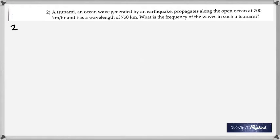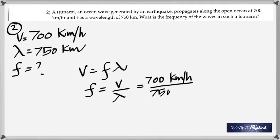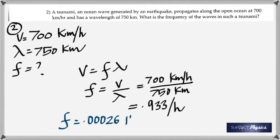That brings us to the second one. A tsunami, an ocean wave generated by an earthquake, propagates along the open ocean at 700 kilometers per hour and has a wavelength of 750 kilometers. What's the frequency? Direct question. Speed given and wavelength given, you got to find the frequency. It's just a matter of dividing. Frequency is speed divided by wavelength. 700 divided by 750, you'll get the answer as 0.933 per hour. But if you want it in seconds, you got to divide that by 3600 so you get it per second, which is hertz.